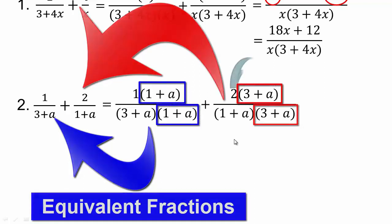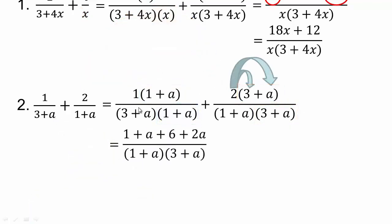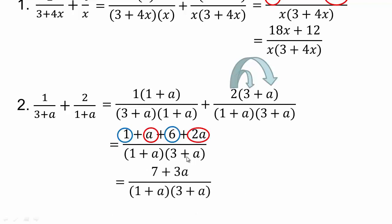This would be good practice for you. Use the distributive property: 1 times 1 is 1, 1 times a is a; 2 times 3 is 6, 2 times a is 2a. Now add like terms. The final answer would be 7 plus 3a divided by (1 plus a) times (3 plus a).